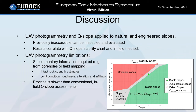Photogrammetry and Q-slope were successfully applied to both natural and engineered slopes. Previously inaccessible areas could now be inspected and evaluated, with results correlating well with in-field methods. However, there are limitations and supplementary information is required, either from boreholes or field mapping, including intact rock strength estimates and the evaluation of joint conditions. The process is also slower than conventional in-field Q-slope assessments. Nevertheless, UAV photogrammetry is a good complement to the in-field methods used today. Thank you and enjoy the rest of the conference.